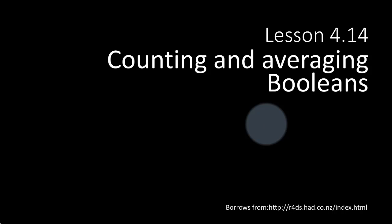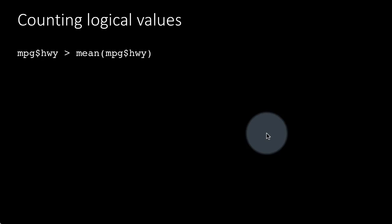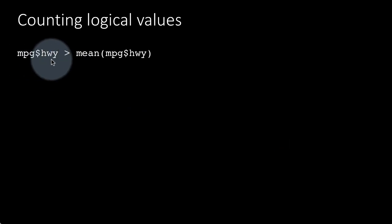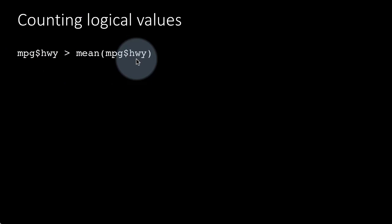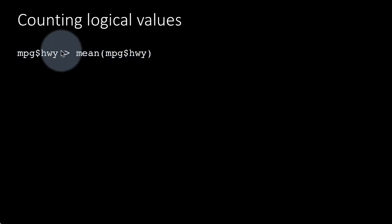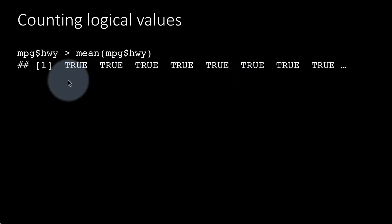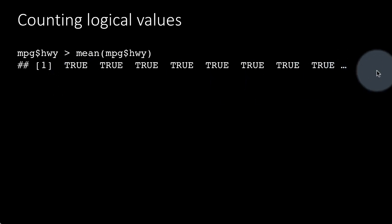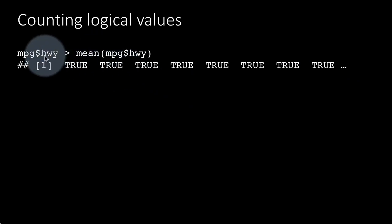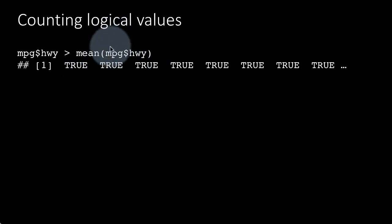When we have Boolean values, we can do some useful things by counting and averaging them. We already know we have a data frame called mpg in ggplot with a column called hwy representing highway miles. An expression like mpg$hwy > mean(mpg$hwy) is a Boolean expression, and since this is a vector, we get a vector of true and false values — the first few happen to be true, and then some will be false.